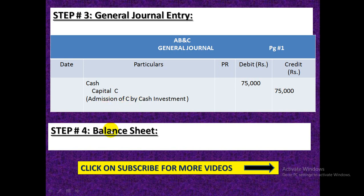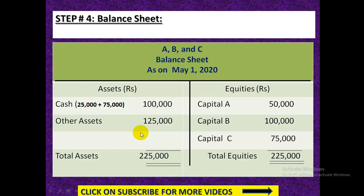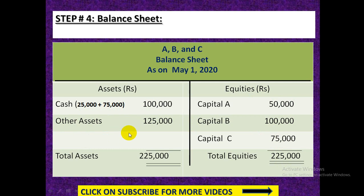Let's look at the balance sheet after admission of Mr. C — for A, B, and C — dated May 1, 2020. The firm already had 25,000 cash; adding the 75,000 brought by Mr. C, total cash becomes 1,00,000. Other assets as given in the question are 1,25,000. Capital A and Capital B are already given. Since this is the investment method, C's investment of 75,000 is shown here. Total assets equal 2,25,000 and total equities equal 2,25,000.